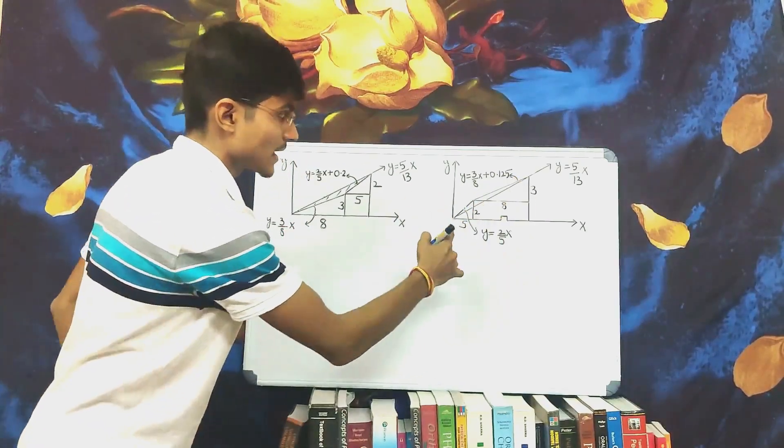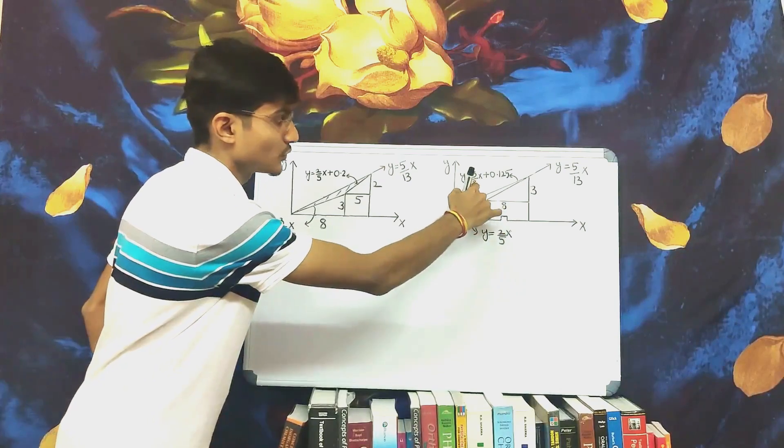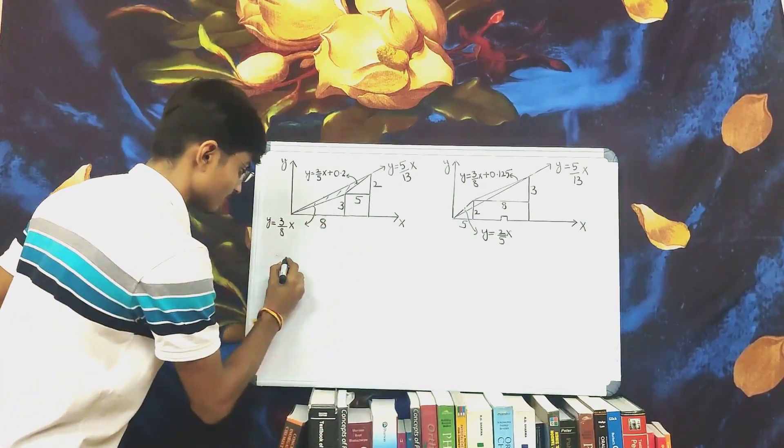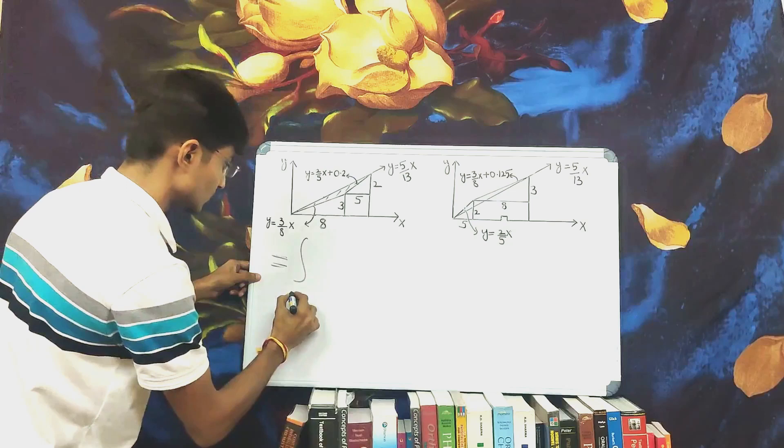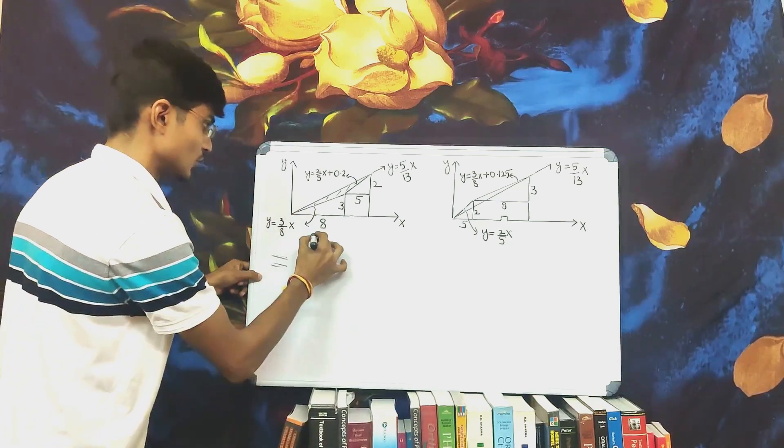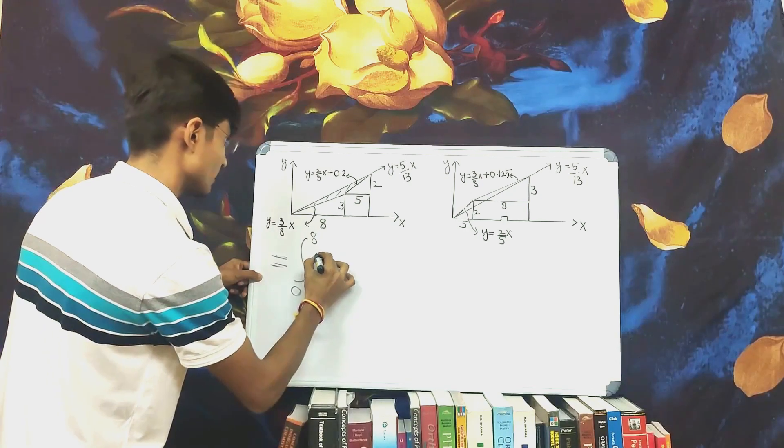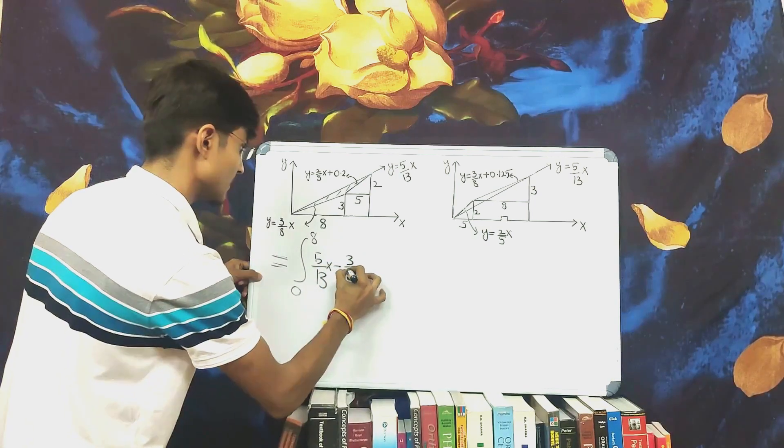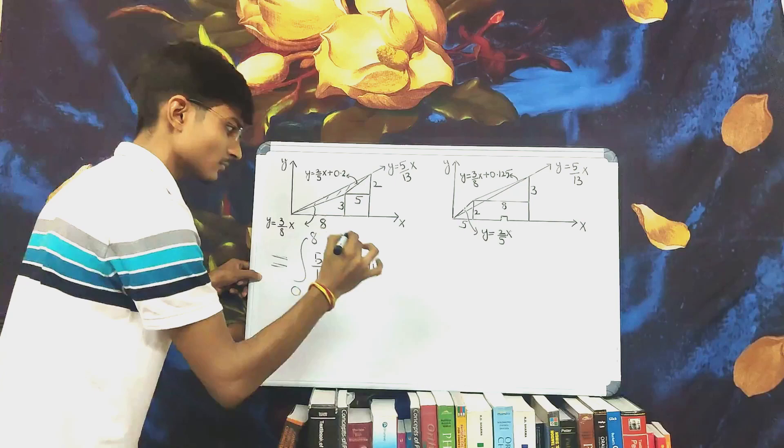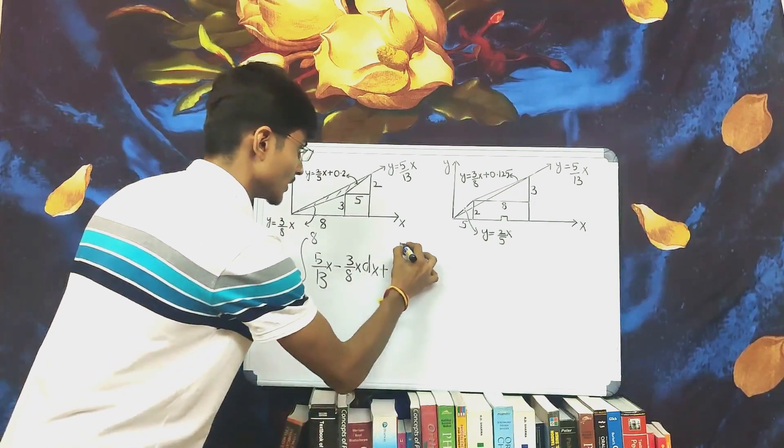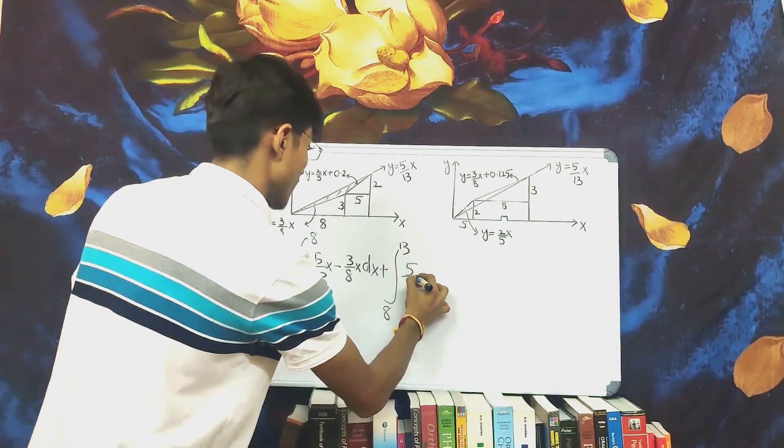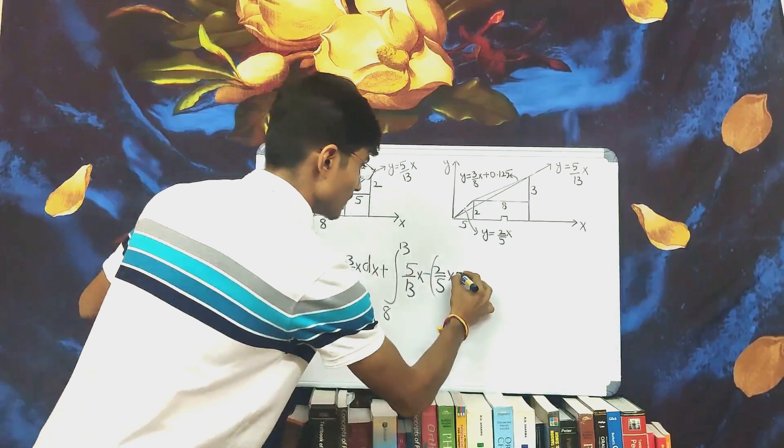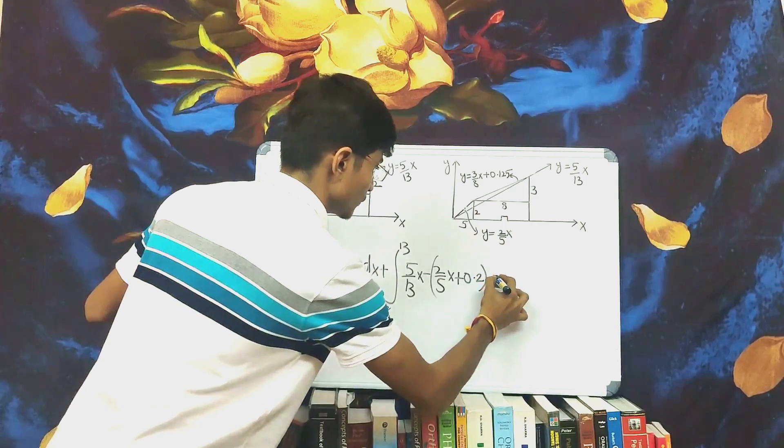In this, the quadrilateral is formed with the sides y equal to 2 by 5x and y equal to 3 by 8x plus a constant term. As mentioned before, the line doesn't start from origin. So the limits will be from x equal to 0 to 8 that is 5 by 13x minus 3 by 8x dx plus limit from 8 to 13, 5 by 13x minus 2 by 5x plus 0.2 dx.